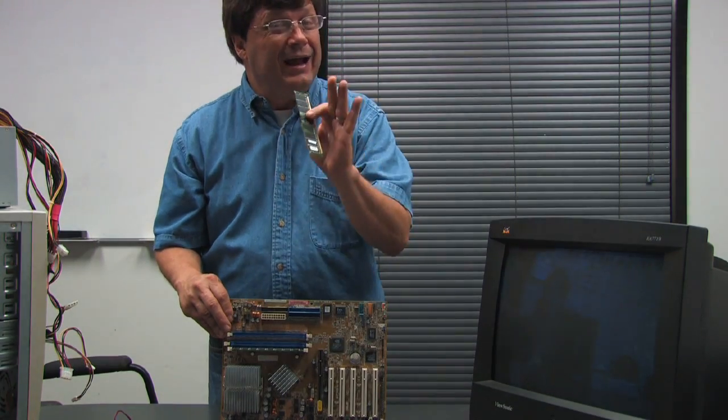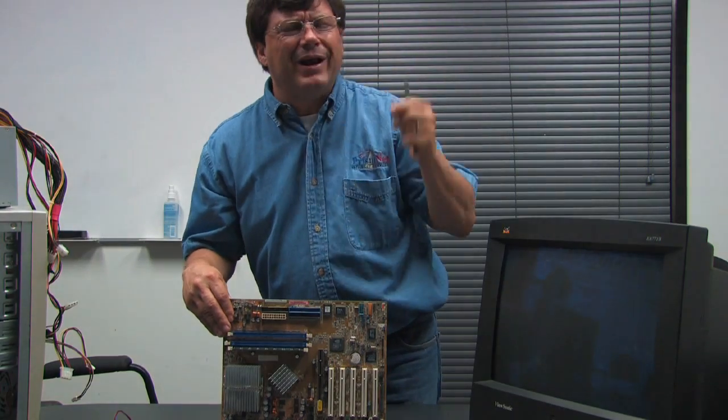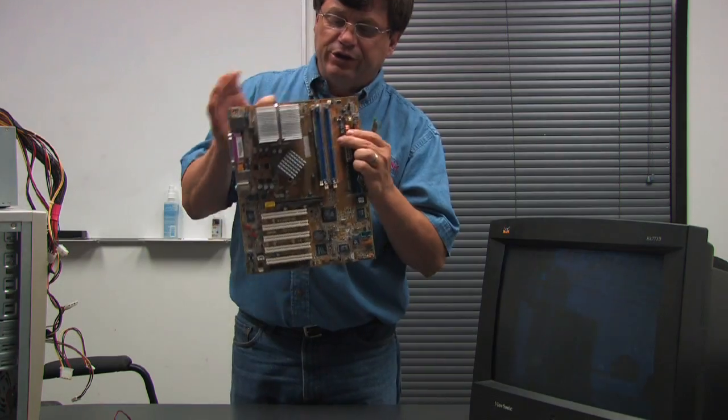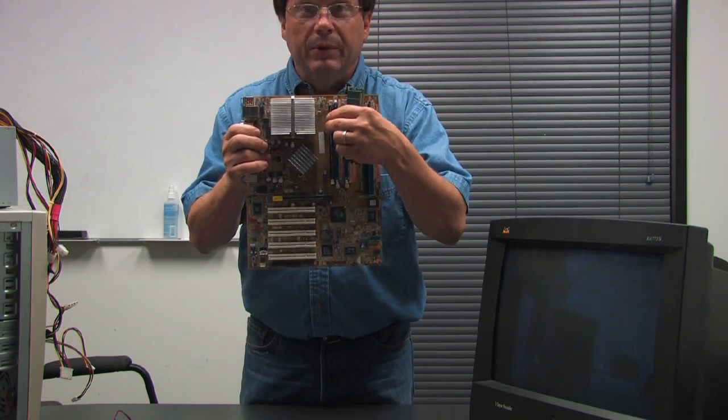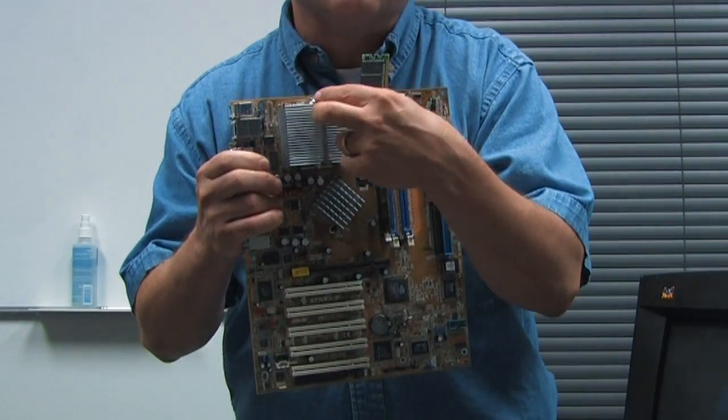A memory chip kind of works like our conscious memory. Whatever we're thinking about, what I need to do, where I'm going, that's how the memory card works. Information goes from the memory card right into the CPU, where all the decisions are actually made.